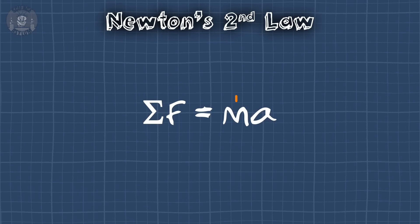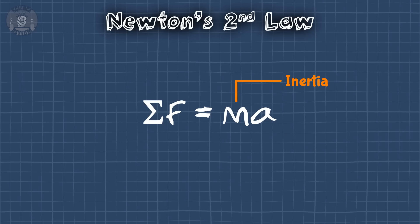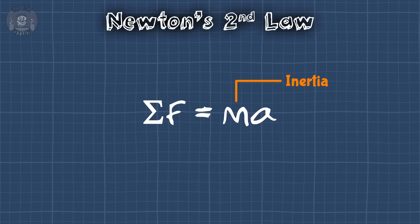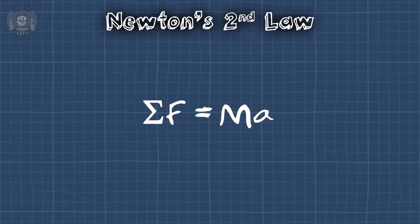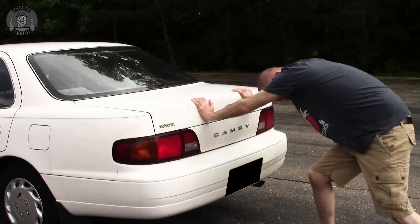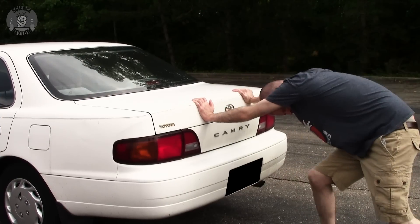According to Newton's second law, mass measures inertia, an object's ability to resist changes in motion. More mass means less acceleration. Anyone who's ever tried to push a broken down car knows exactly what I mean.